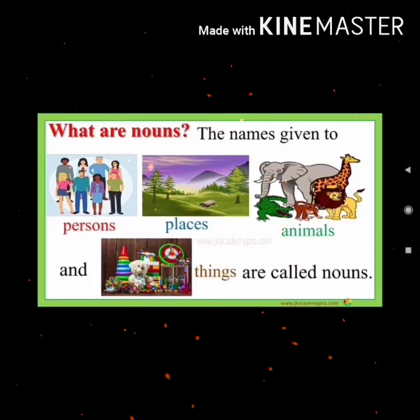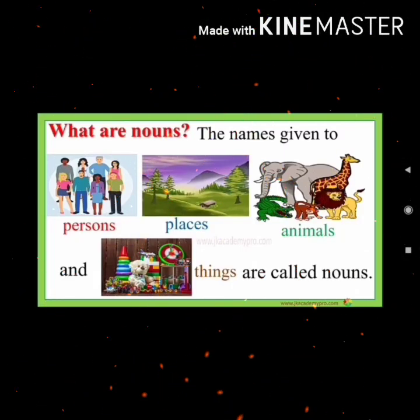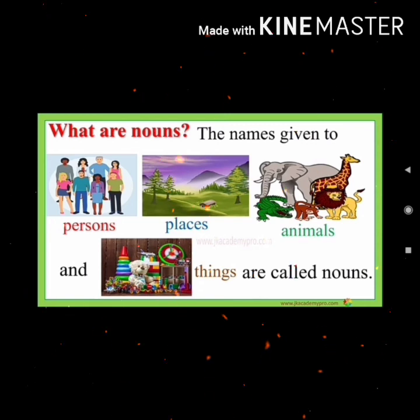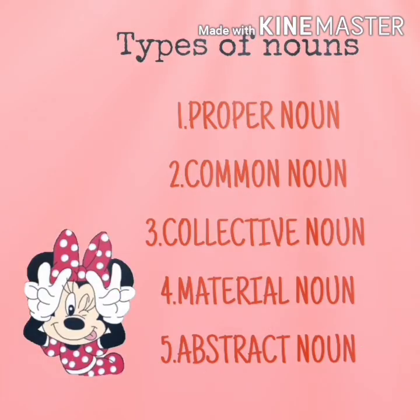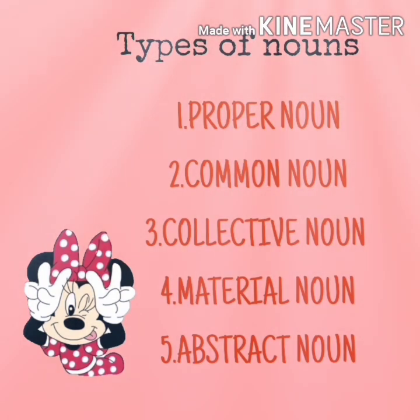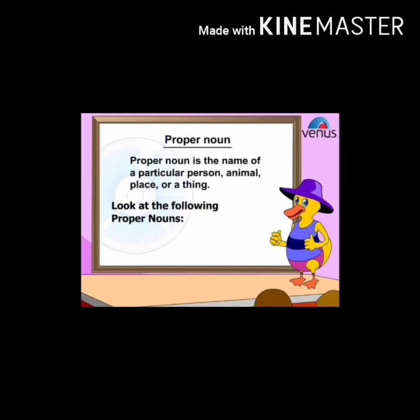What are nouns? The names given to persons, places, animals, and things are called nouns. Types of nouns: proper noun, common noun, collective noun, material noun, and abstract noun.